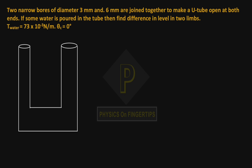Hello students, welcome to concept video using Physics on Fingertips. Our question is: two narrow bores of diameter 3 mm and 6 mm are joined together to make a U-tube open at both ends. If some water is poured in the tube, then find difference in level in two limbs.